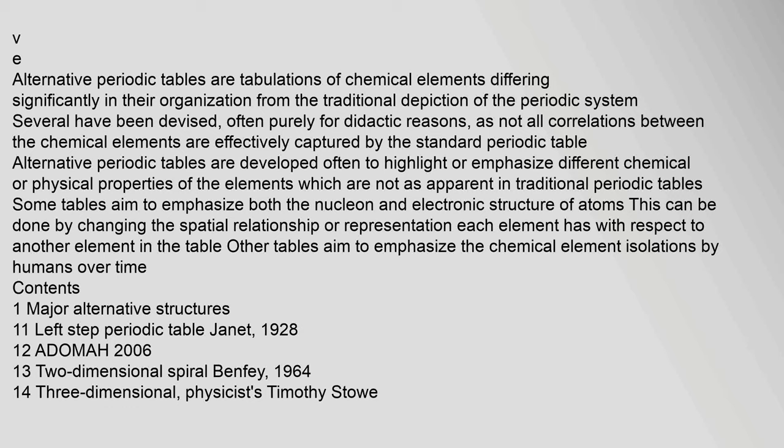Alternative periodic tables are tabulations of chemical elements differing significantly in their organization from the traditional depiction of the periodic system. Several have been devised, often purely for didactic reasons, as not all correlations between the chemical elements are effectively captured by the standard periodic table. Alternative periodic tables are developed often to highlight or emphasize different chemical or physical properties of the elements.